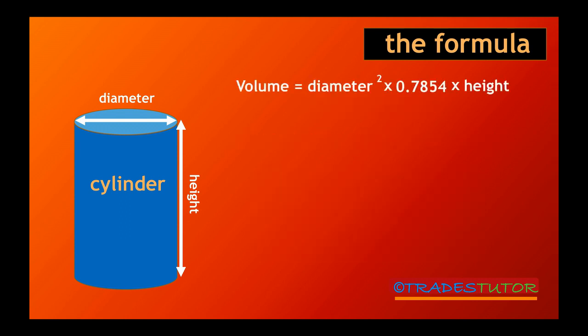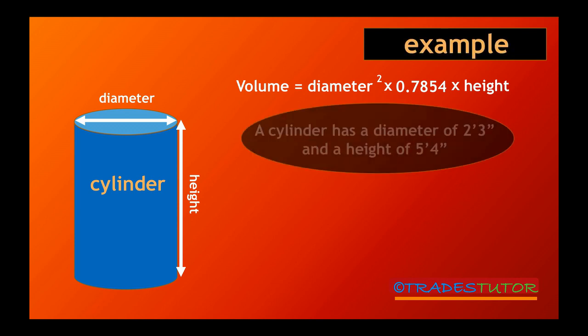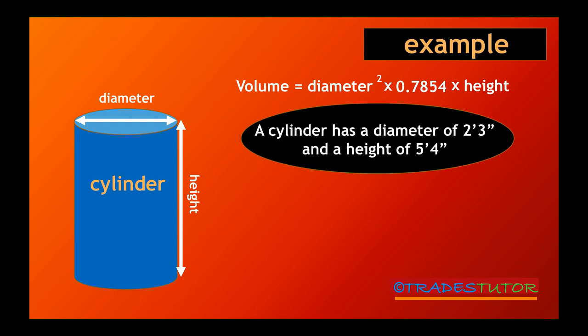So there's your formula, and we'll do an example. A cylinder has a diameter of 2 feet 3 inches and a height of 5 feet 4 inches. Put those there, and now we have a problem.